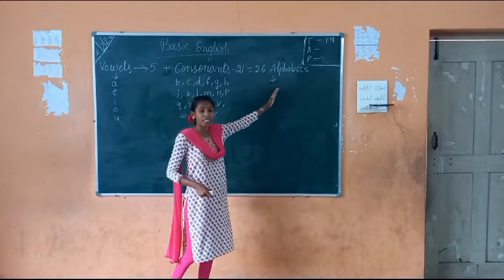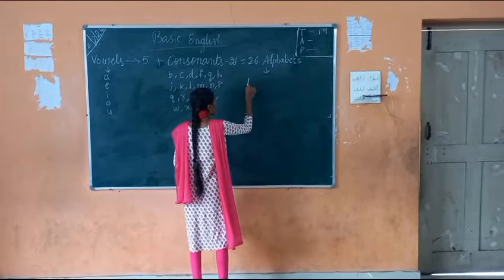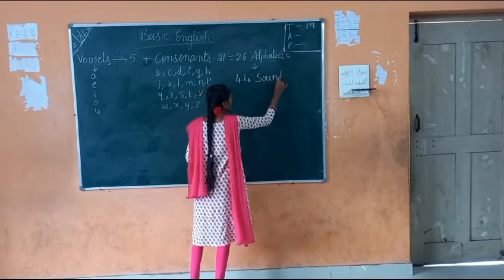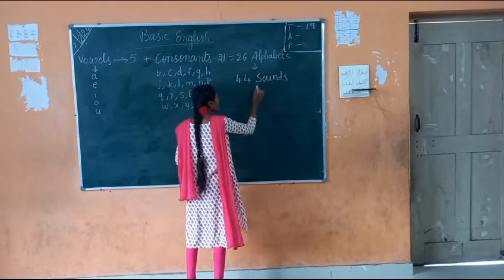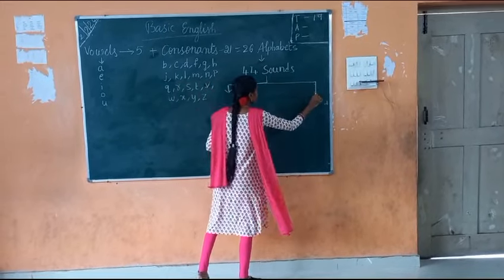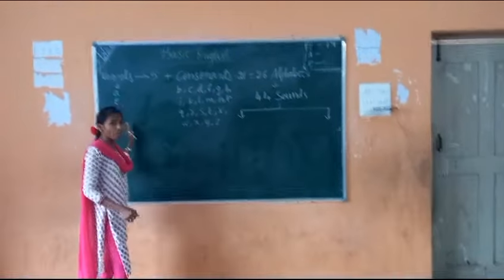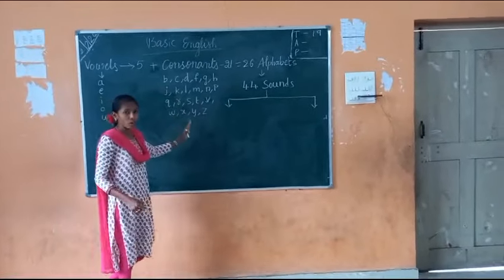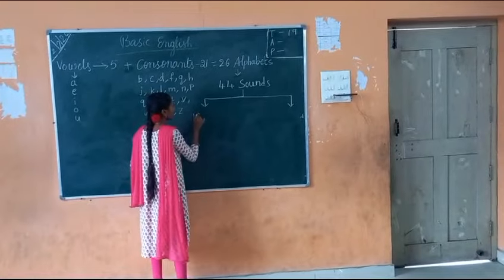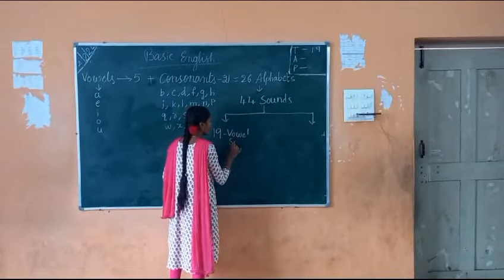These 26 letters give us 44 sounds. How many sounds? 44 sounds. These 44 sounds are divided into 2 types. 19 are vowel sounds.